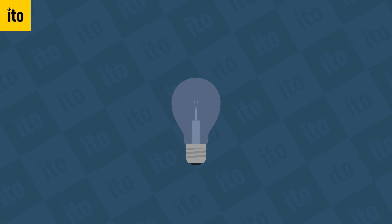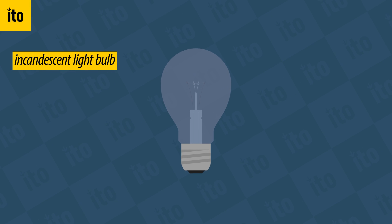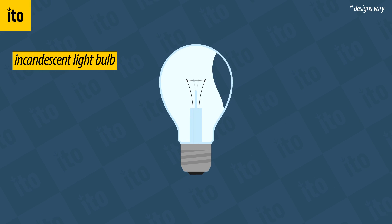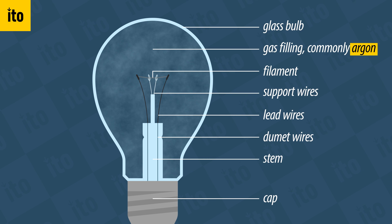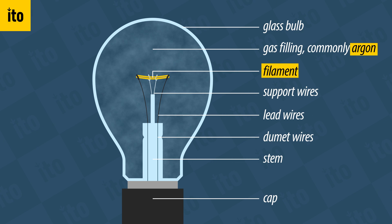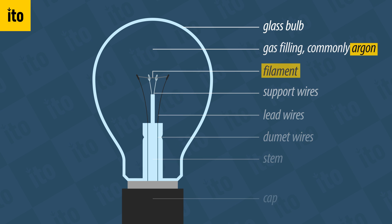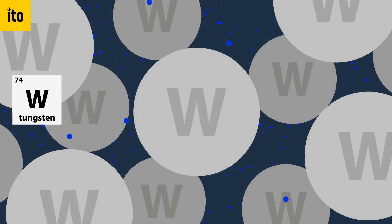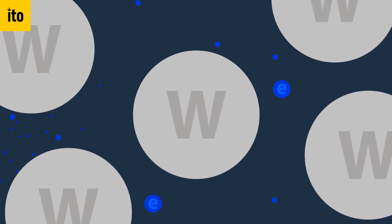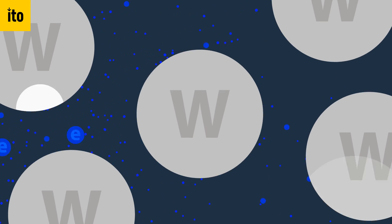Let's showcase resistance at work in a more practical example: an old-fashioned light bulb. Incandescent light bulbs use the heating effect of resistance to their advantage. These bulbs are filled with an inert gas, commonly argon. This gas is chemically unreactive and protects the filament from oxidation. This filament is often made from tungsten. The electrical current flows through that metallic filament, and electrons moving through that material collide with the tungsten atoms.